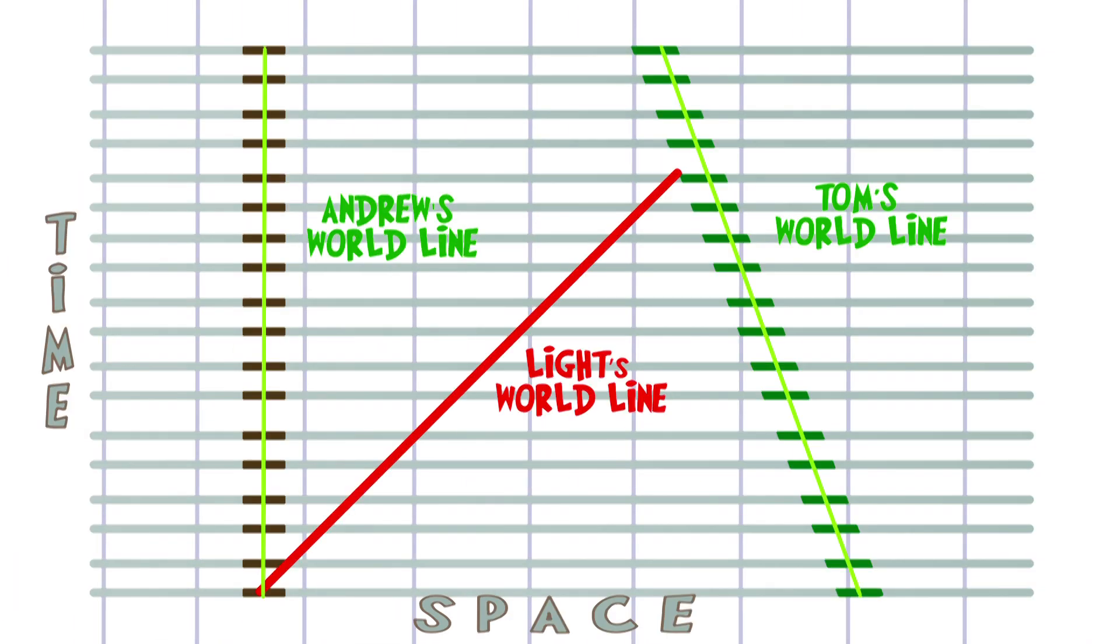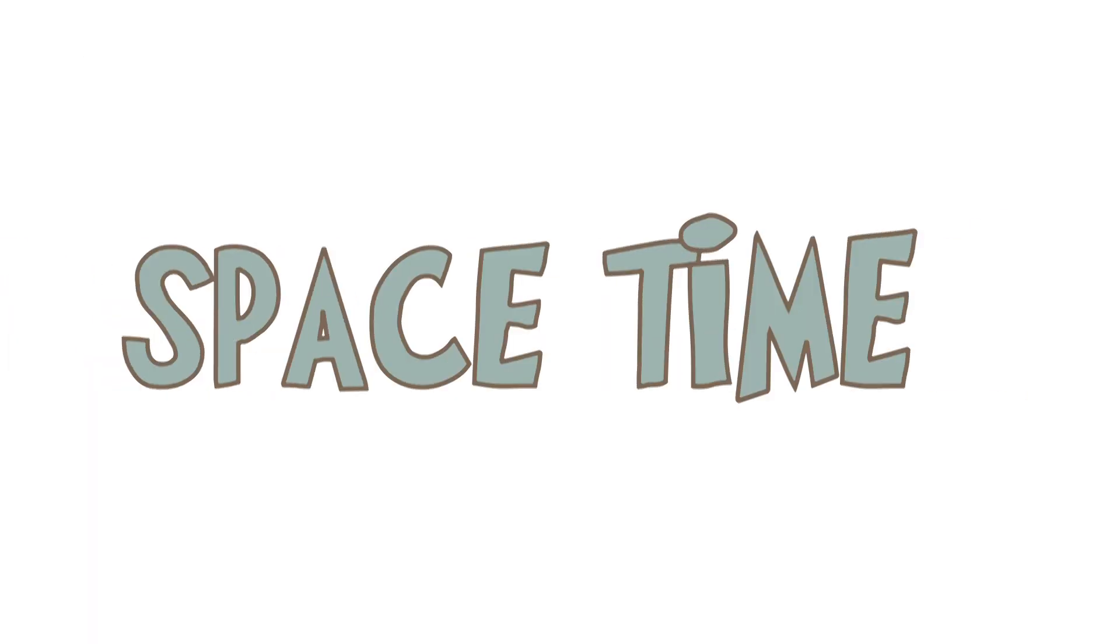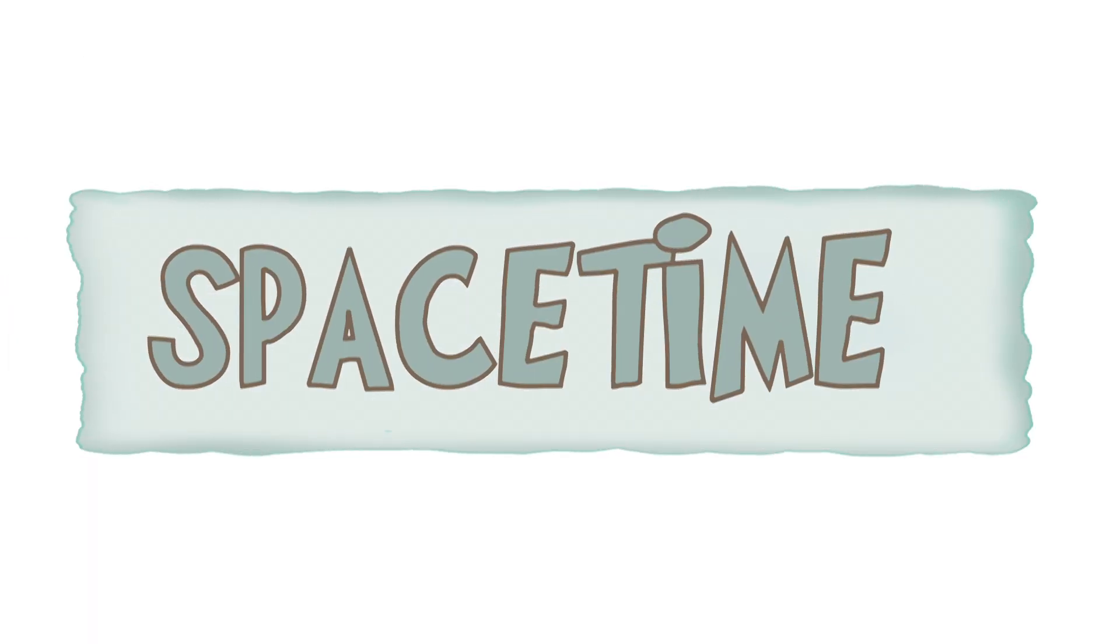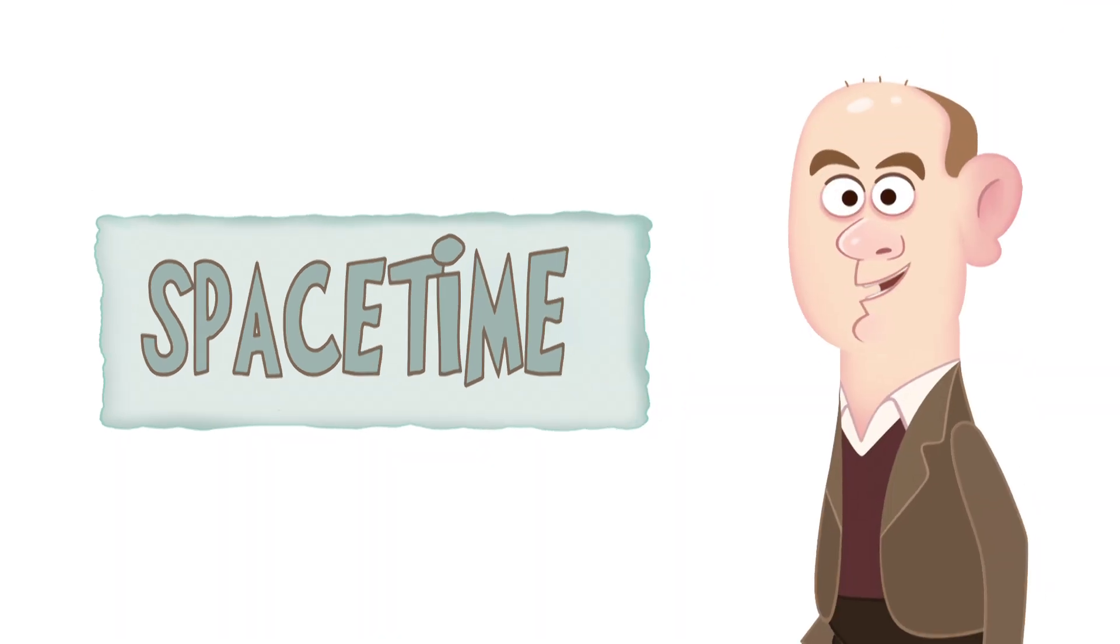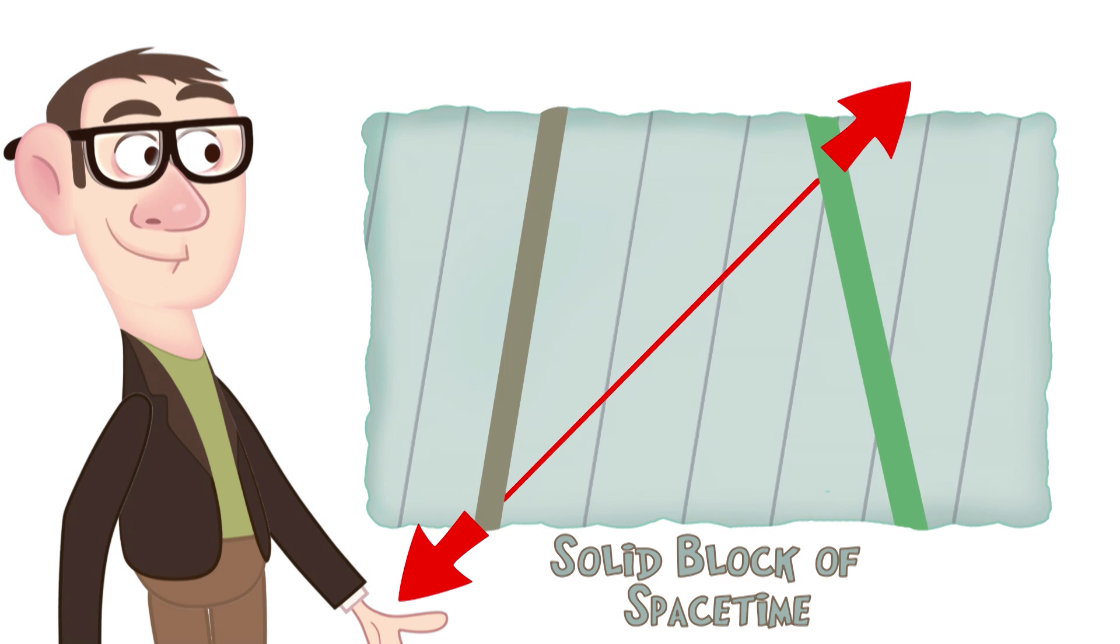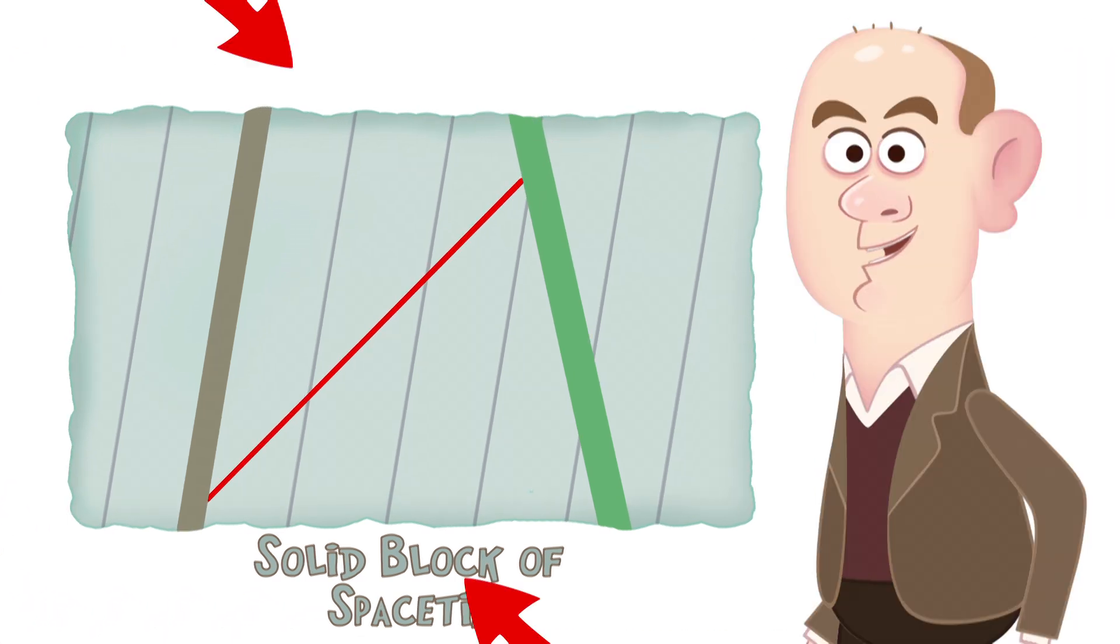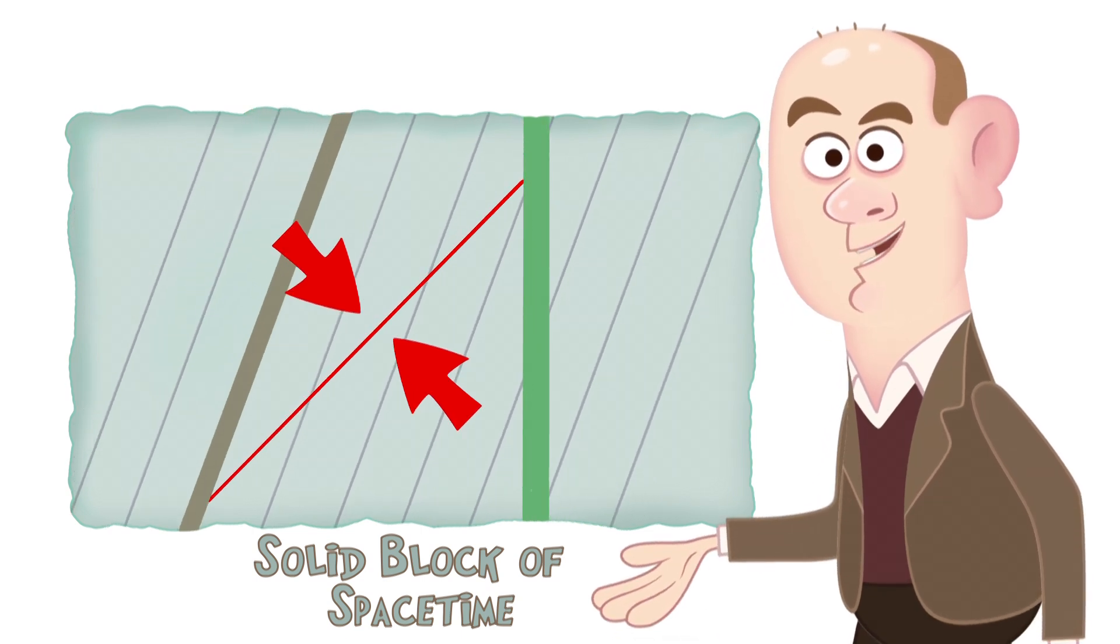First we need to glue together the separate panels into one solid block. This gives us our spacetime, turning space and time into one smooth continuous material. And now here is the trick: what you do is stretch your block of spacetime along the light world line, then squash it by the same amount but at right angles to the light world line.